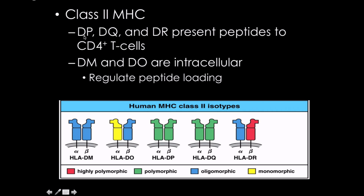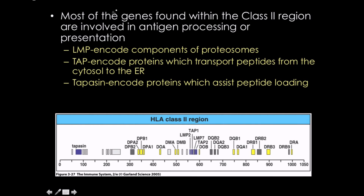For class 2, HLA-DP, DQ, and DR are responsible for antigen presentation. DM and DO are intracellular proteins that regulate peptide loading — DM increases peptide loading and DO inhibits it. Most genes in the class 2 region are involved in antigen processing or presentation. For example, L and P are catalytic subunits of the proteasome, and TAP is involved as well. These are all located in similar genomic regions.